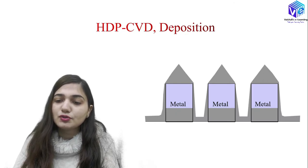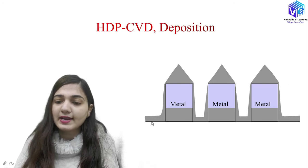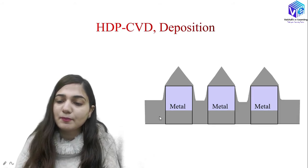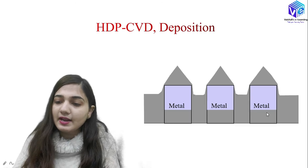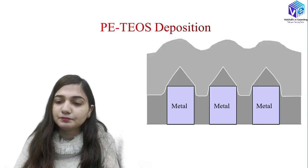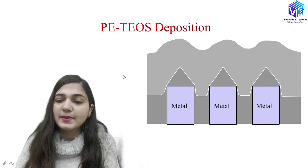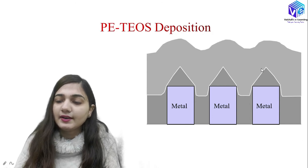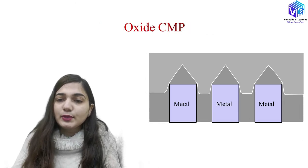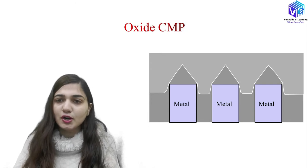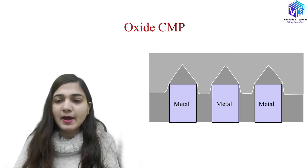First, I am going to deposit a dielectric substance. The dielectric substance is deposited in the high density plasma, and after that we have the same deposition cycle again. After that we have the plasma enhanced TEOS deposition. This is my PETEOS layer. After that, we are going to do planarization with chemical mechanical polishing. We are going to talk about CMP in detail in some upcoming videos.